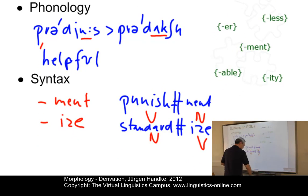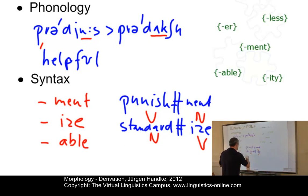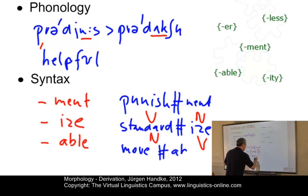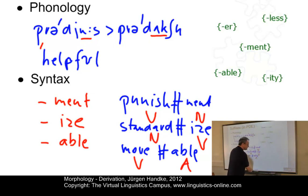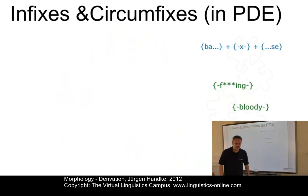The third group are adjectival affixes. For example, '-able' in 'movable,' which becomes an adjective — here we have a change from verb to adjective. Other examples would be something like 'top,' which is a noun, and if you add '-less,' an adjectival affix, it becomes 'topless.'